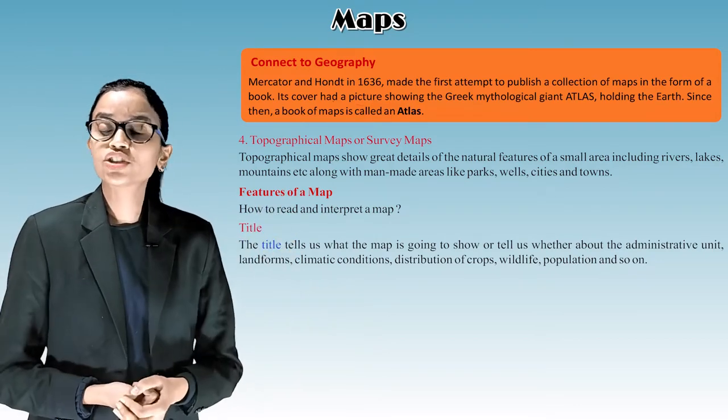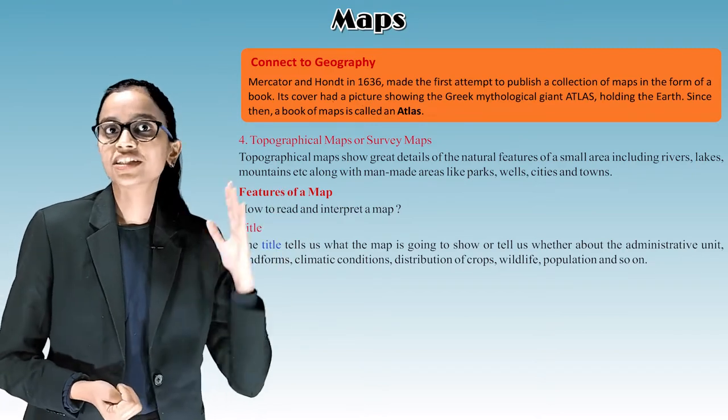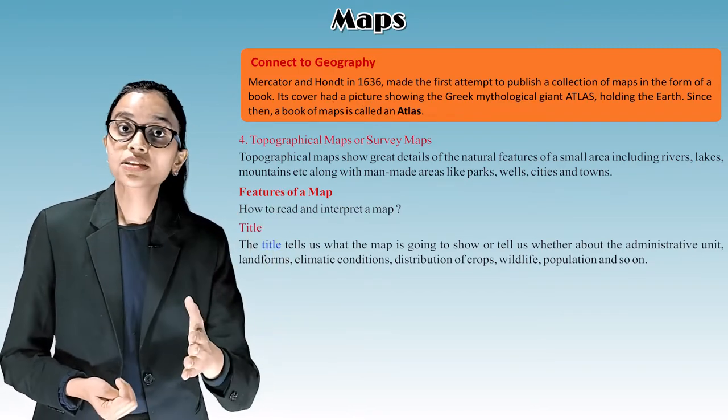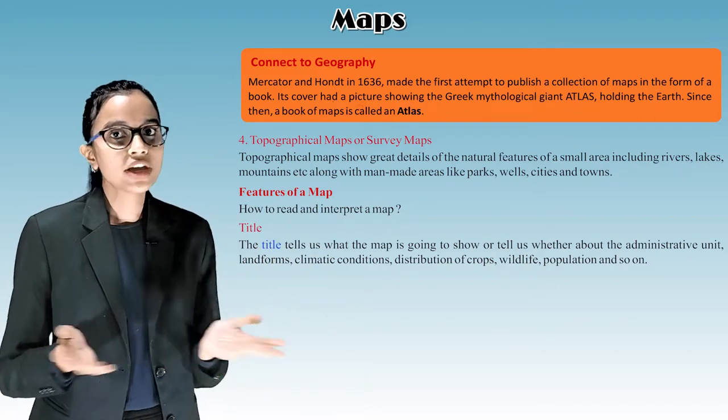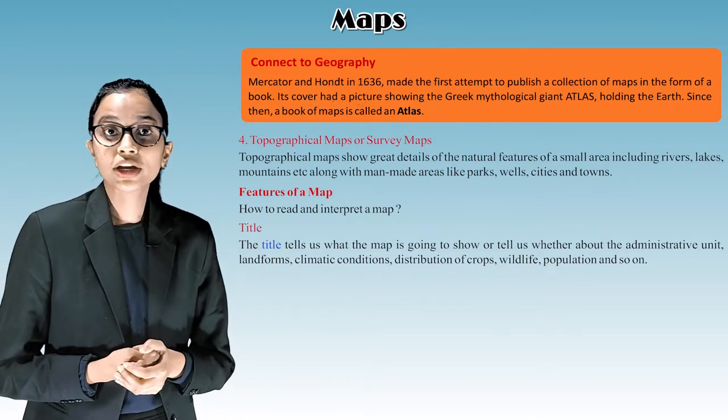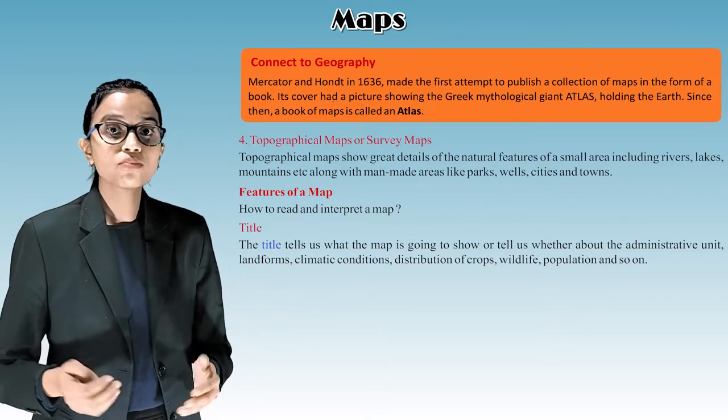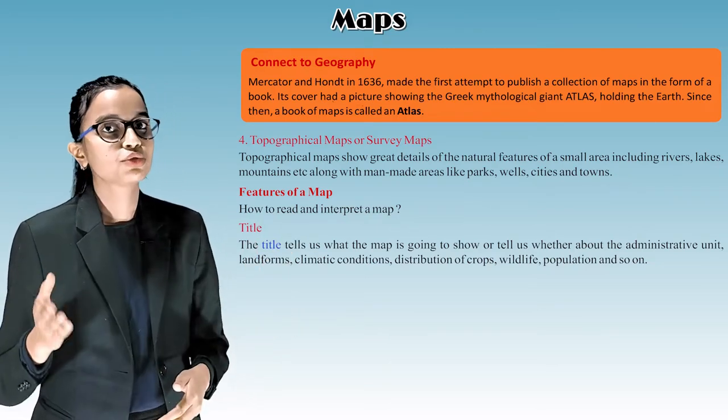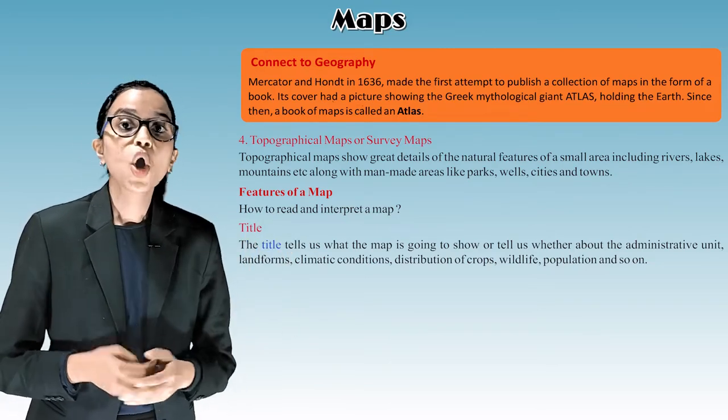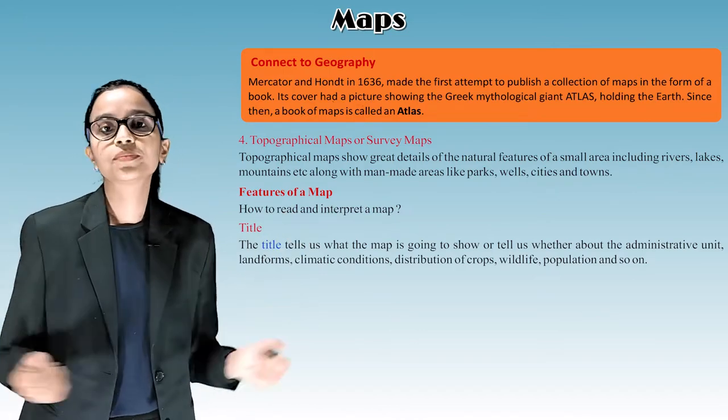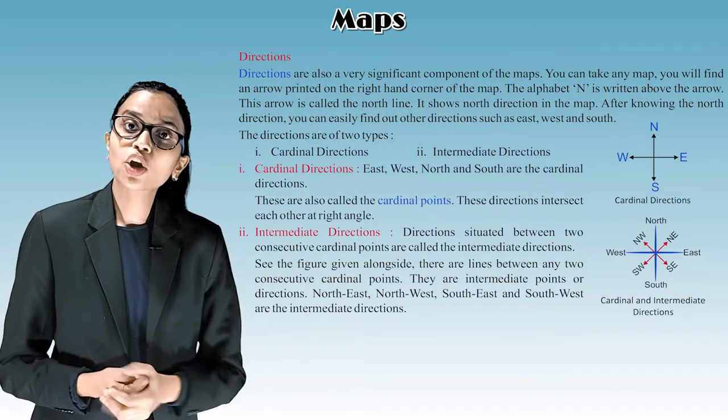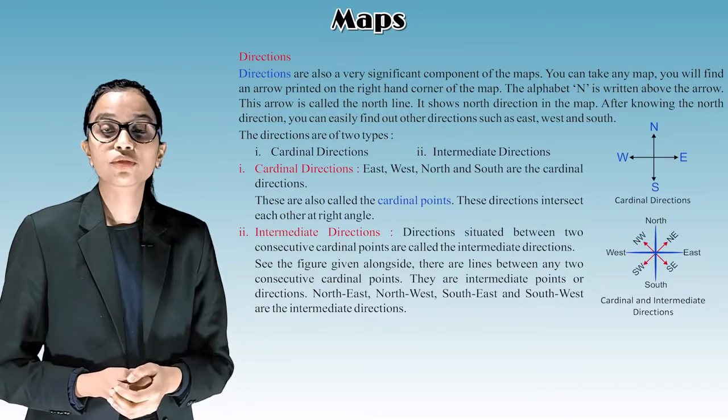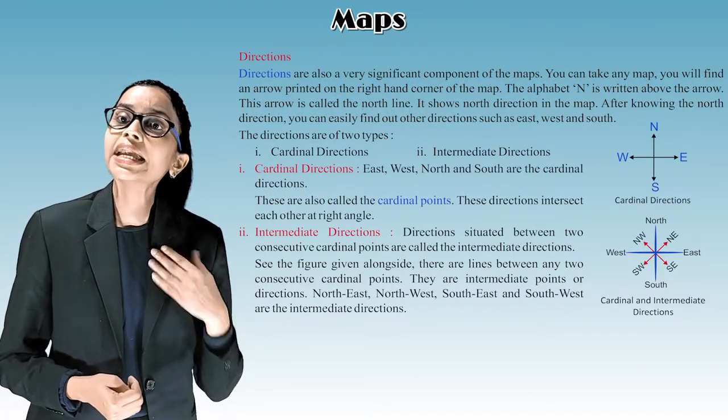Features of a map. How to read and interpret a map. Title. The title tells us what the map is going to show or tell us, whether about the administrative unit, landforms, climatic condition, distribution of crops, wildlife, population and so on.